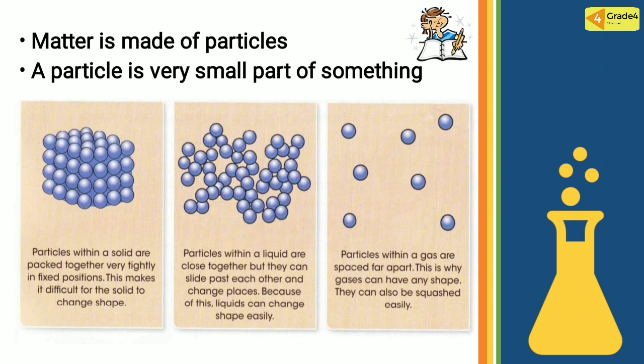Picture number one is solid. Particles within a solid are packed together very tightly in fixed positions. This makes it difficult for the solid to change shape. Picture number two: particles within a liquid are close together, but they can slide past each other and change places. Because of this, liquid can change shape easily. Picture number three: particles within a gas are spaced apart. This is why gases can have any shape and can also be squashed easily.